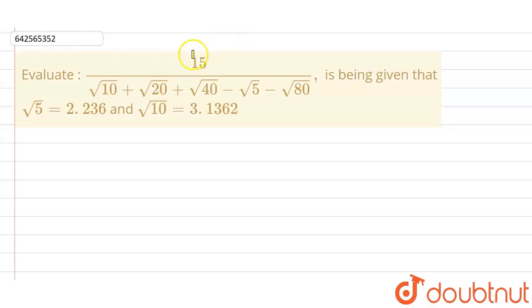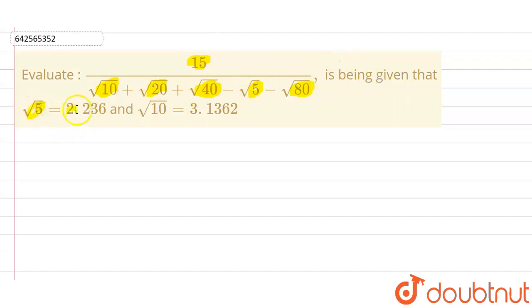Hello everyone. The question is: evaluate 15 upon (√10 + √20 + √40 − √5 − √80), given that √5 = 2.236 and √10 = 3.1362.